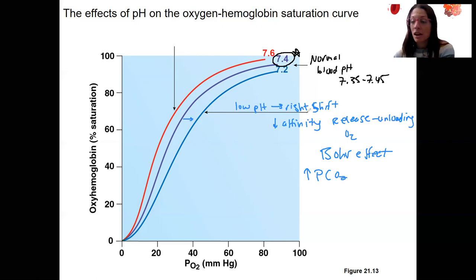And then the opposite direction, the opposite is true. So a higher pH, increase in pH is going to mean higher affinity. So this is going to increase loading. It would be due to the opposite. So low PCO2, high pH.